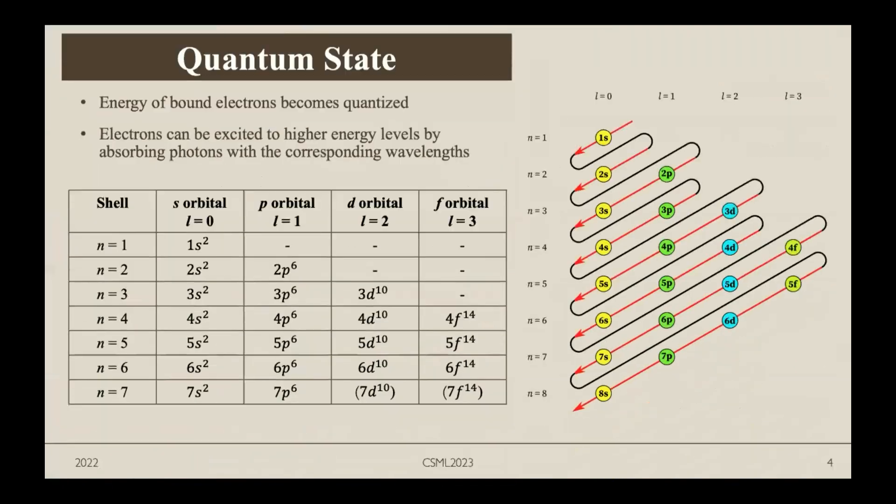The first concept is quantum state. In quantum mechanics, the energy of bound electrons becomes quantized, and electrons at the ground state can be excited to higher energy levels by absorbing photons. The left side shows electronic configurations and the right side shows the order electrons must be filled, according to the Aufbau principle.